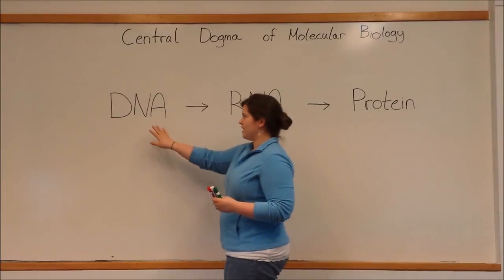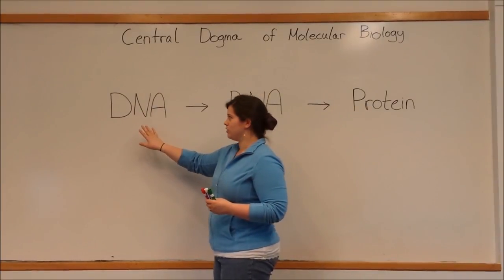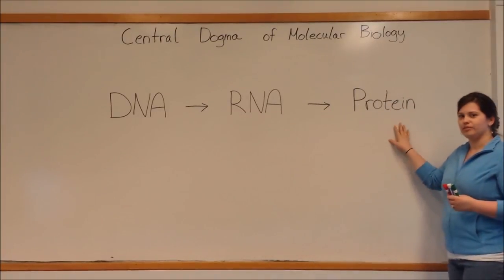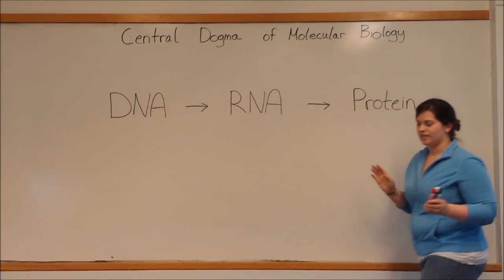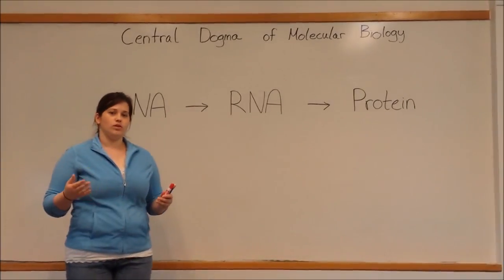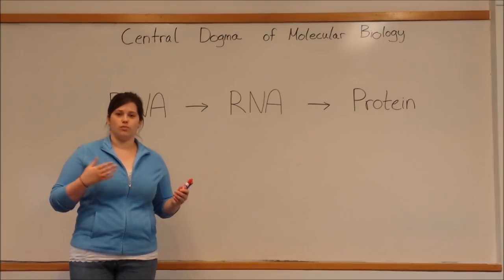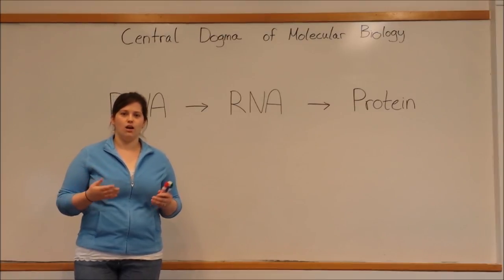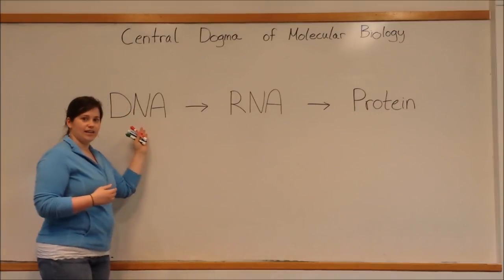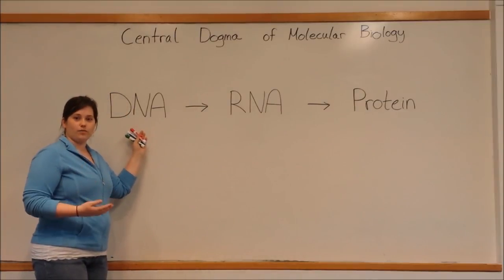The central dogma says that genetic information travels from DNA to RNA to protein. Let's look at this in a little more detail. Basically, all of life - animals, including humans, plants, fungi, bacteria - all living things have cells that have DNA as our genetic information.